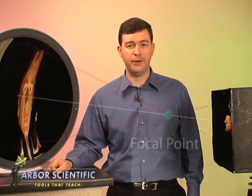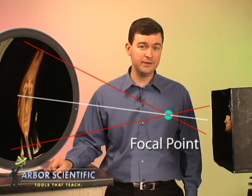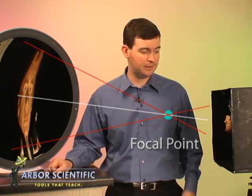When an object is placed outside the focal point of a concave mirror, a real, inverted image is formed. Here's our real object, and here's our real image.